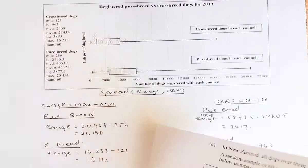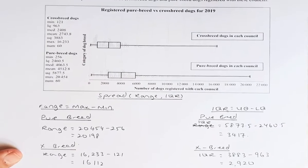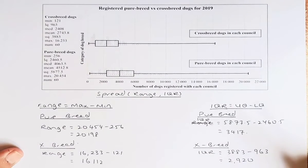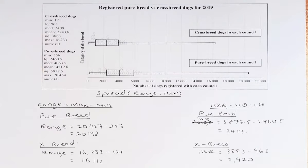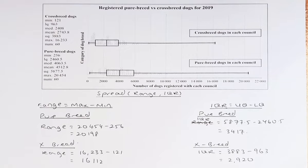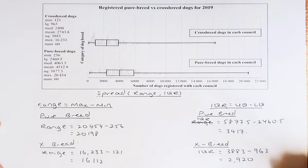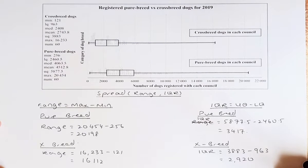Now we are looking at the second analysis: the spread. The spread is made up of the range and interquartile range. We look at the range first — it is just the maximum minus the minimum, found again on the left-hand side of the graph. For purebred, the maximum is 20,454 and the minimum is 256, giving a range of 20,198.